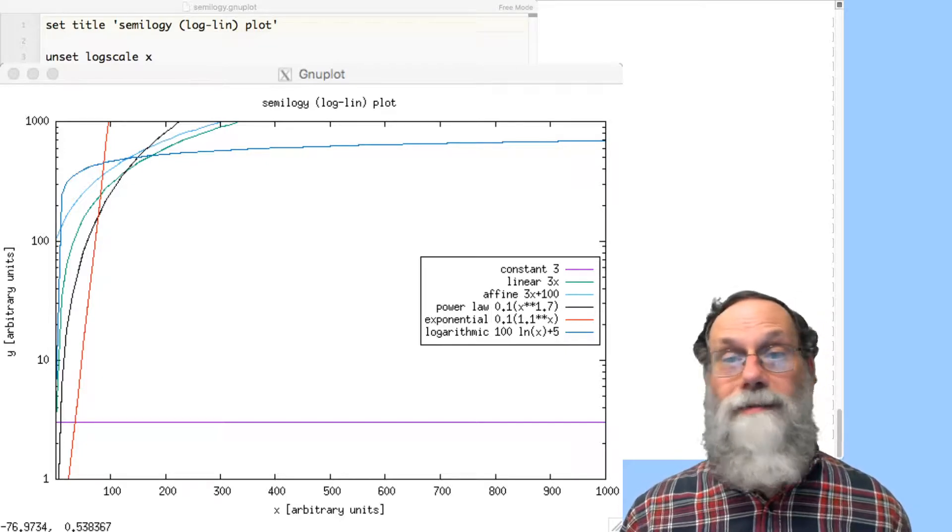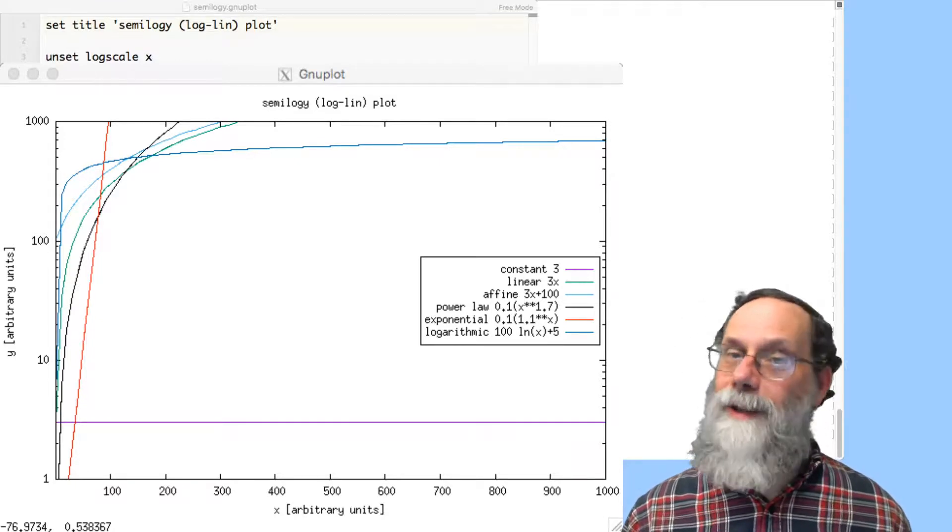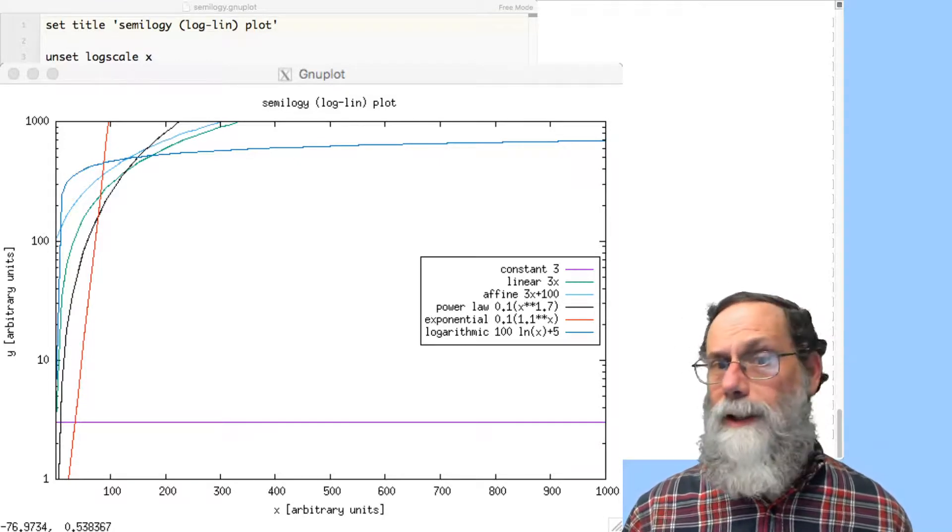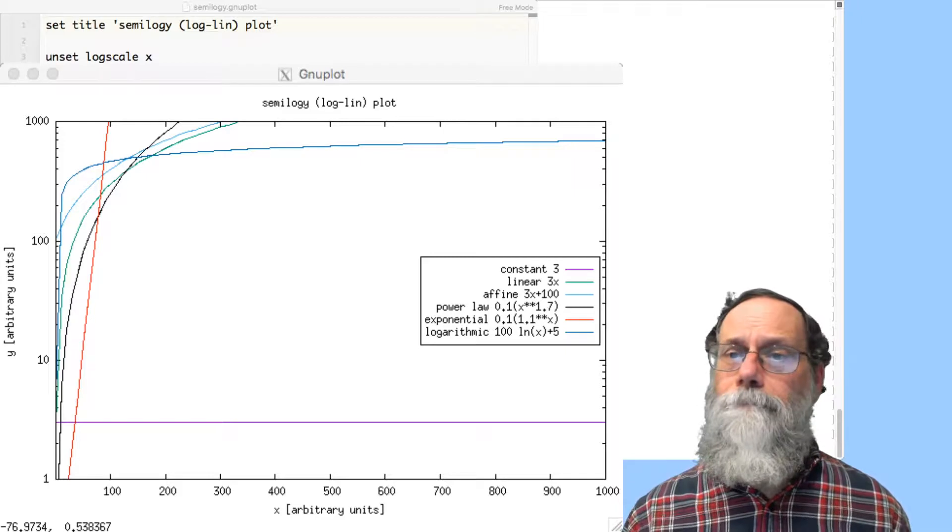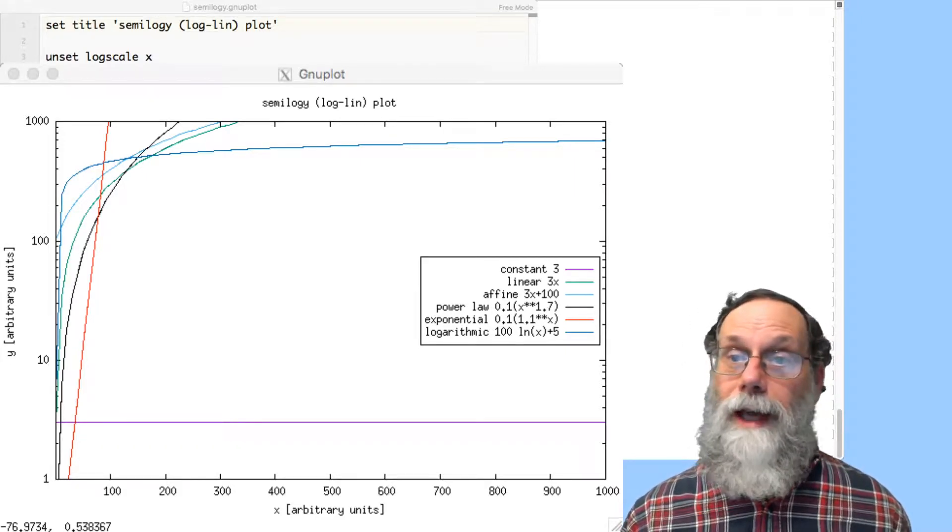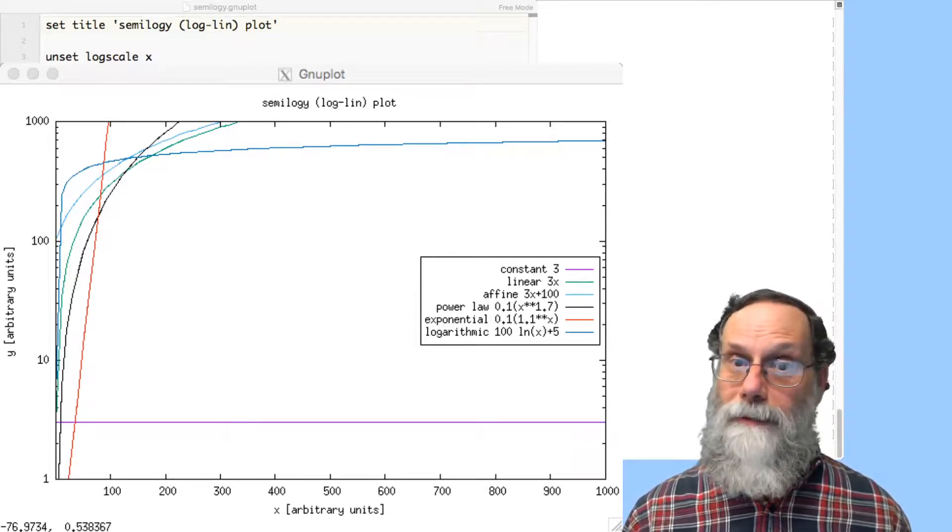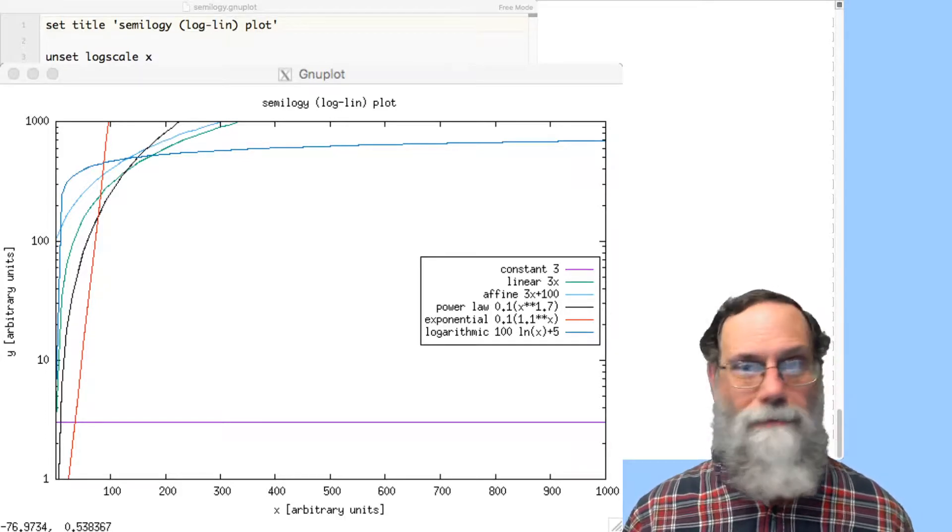Now, the linear that's curved now, the green line there is curved. The affine, a little bit higher, looks a little different. They don't even look parallel anymore. The power law that's curved also. The exponential. Now, there's a straight line. The red line there is straight. There is no knee happening around 50. The thing is just running straight up.